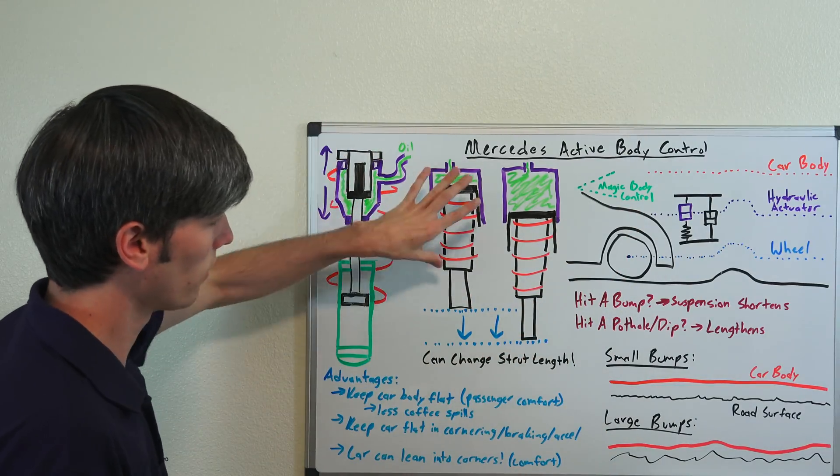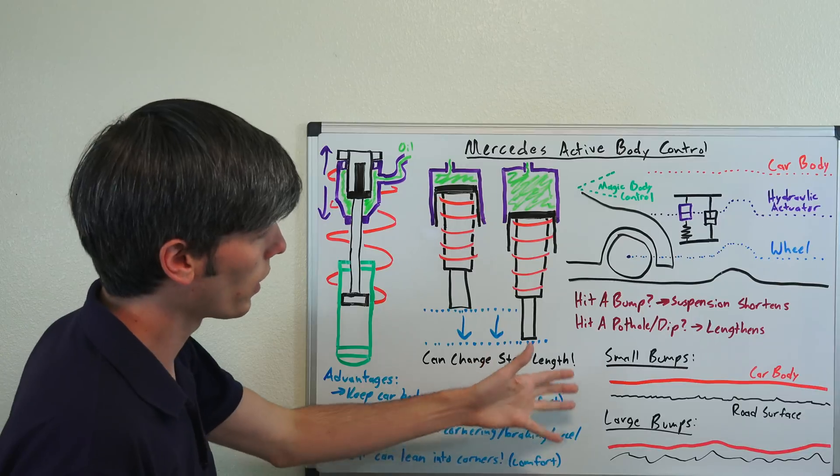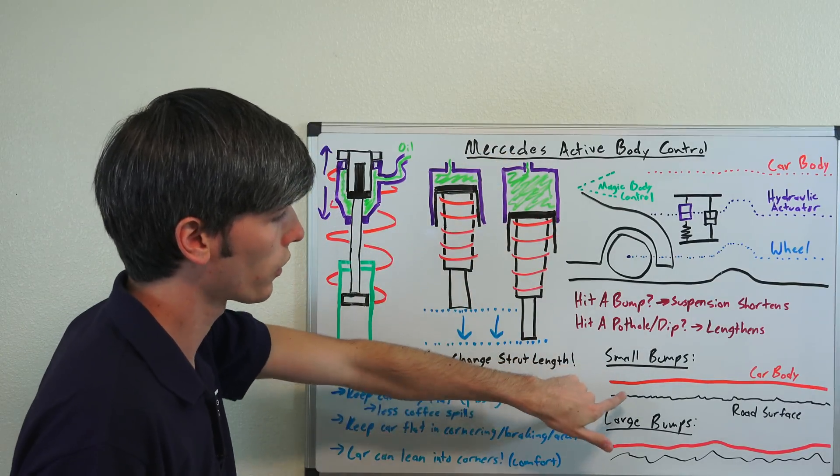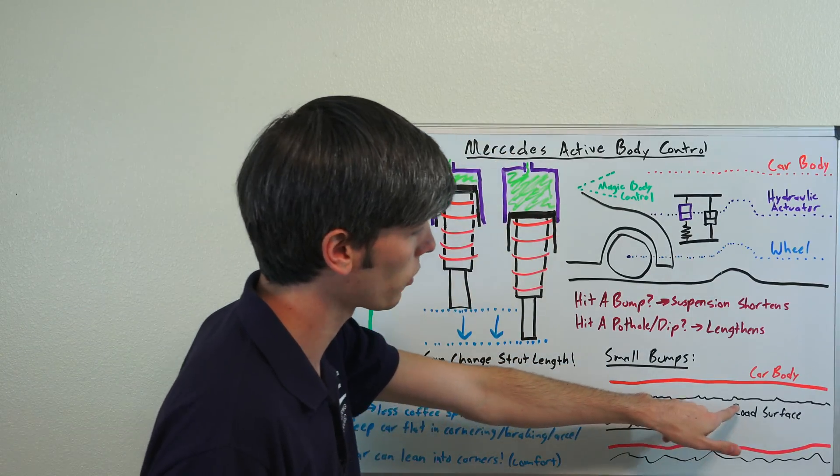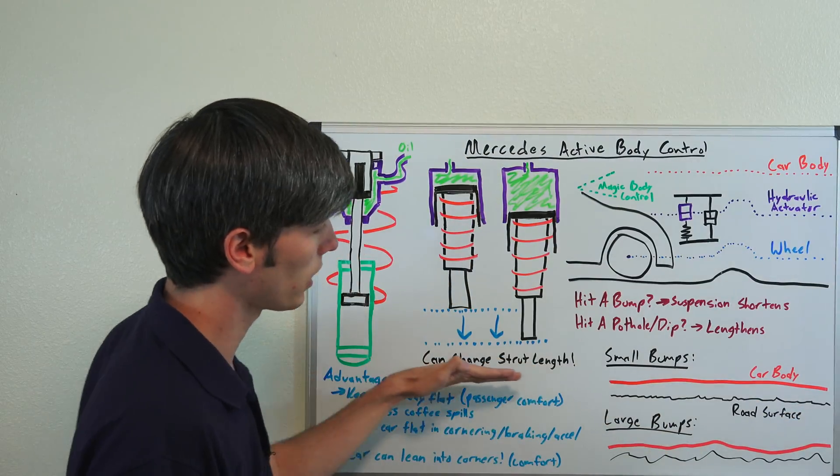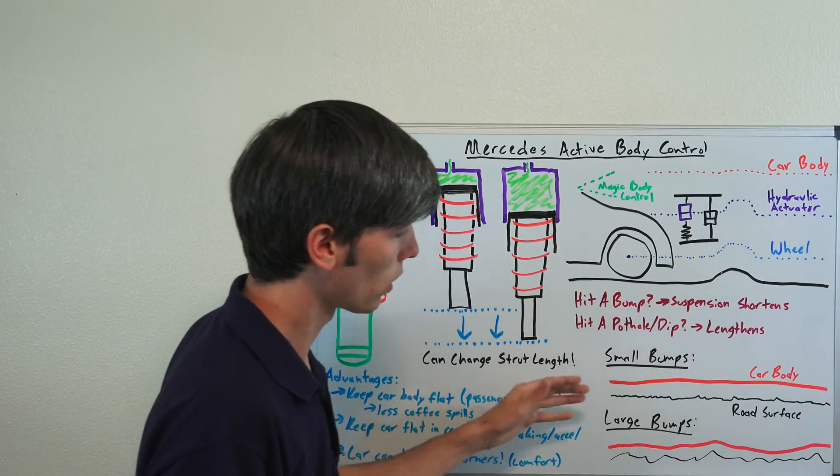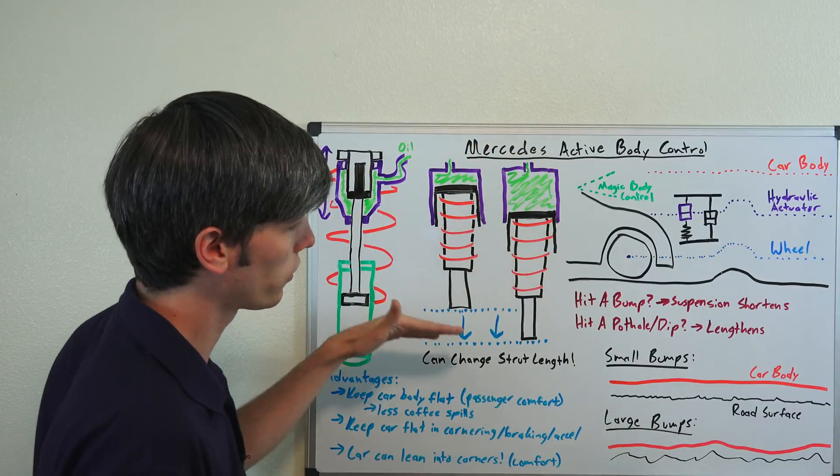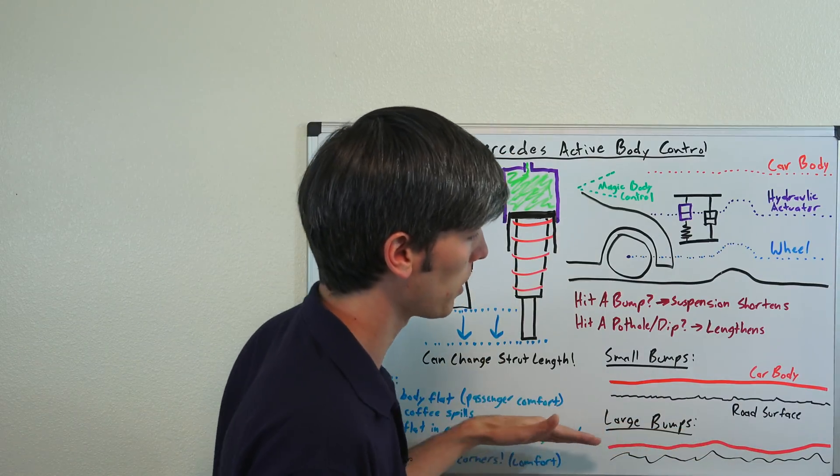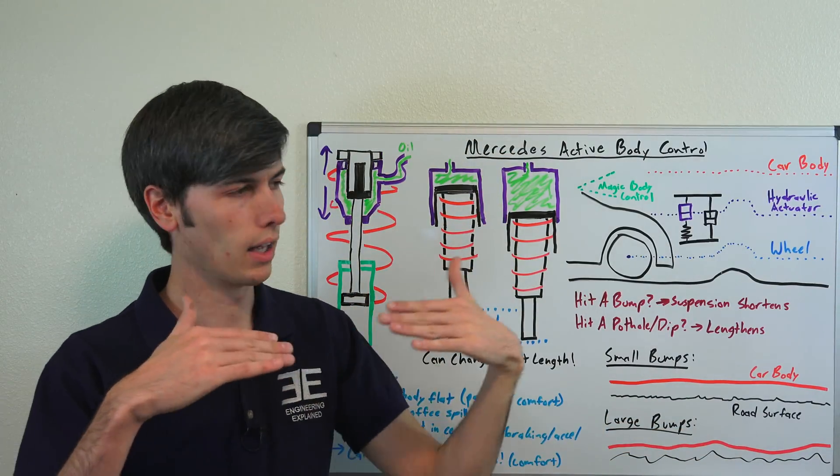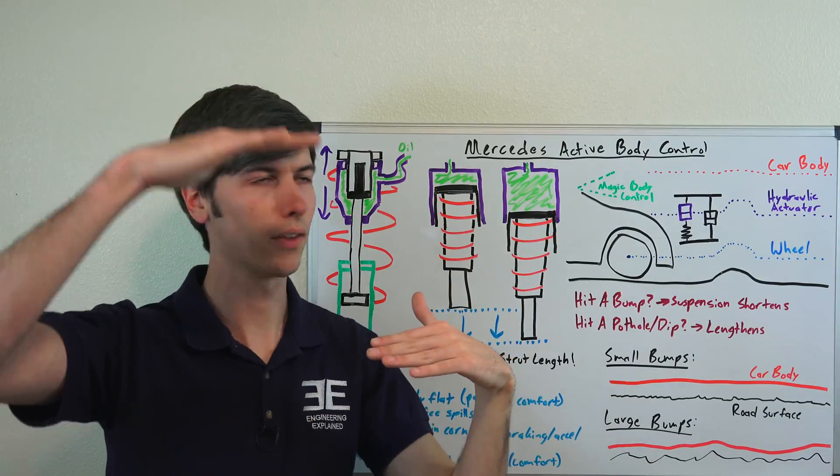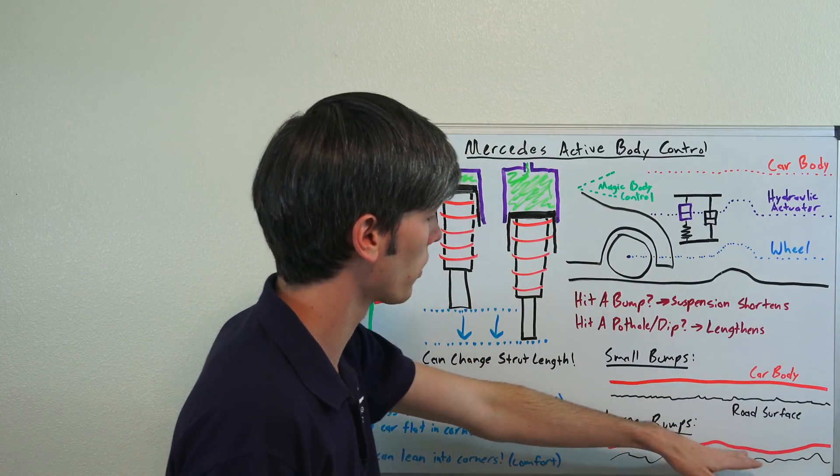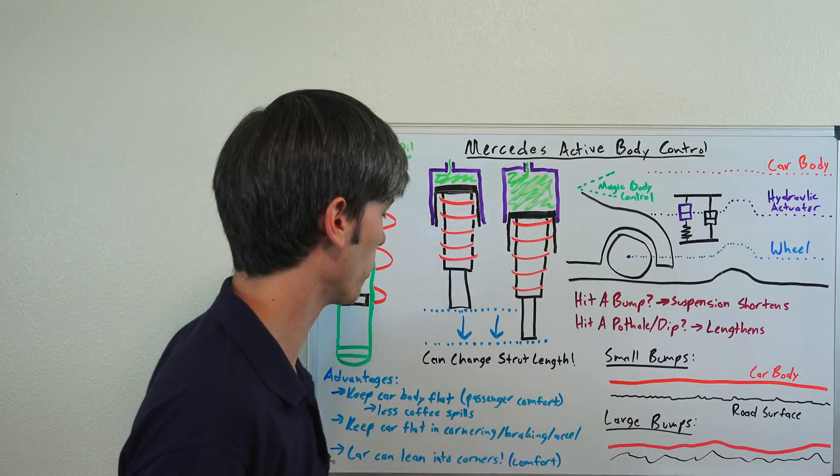So a really cool system. It's all going to be dependent on how much travel this thing has. For smaller bumps, like this road surface, you're going to be able to maintain a perfectly smooth ride. For larger bumps which are going to be outside of the range that this can travel, it's just going to smooth that out so it's not going to be perfect. But it's able to smoothen that out and it's going to be very comfortable.